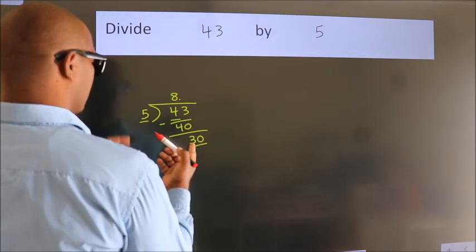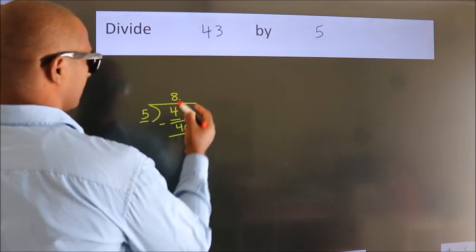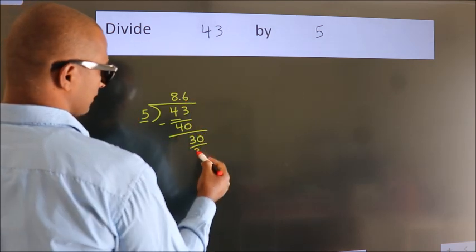When do we get 30 in the 5 table? 5 times 6 equals 30.